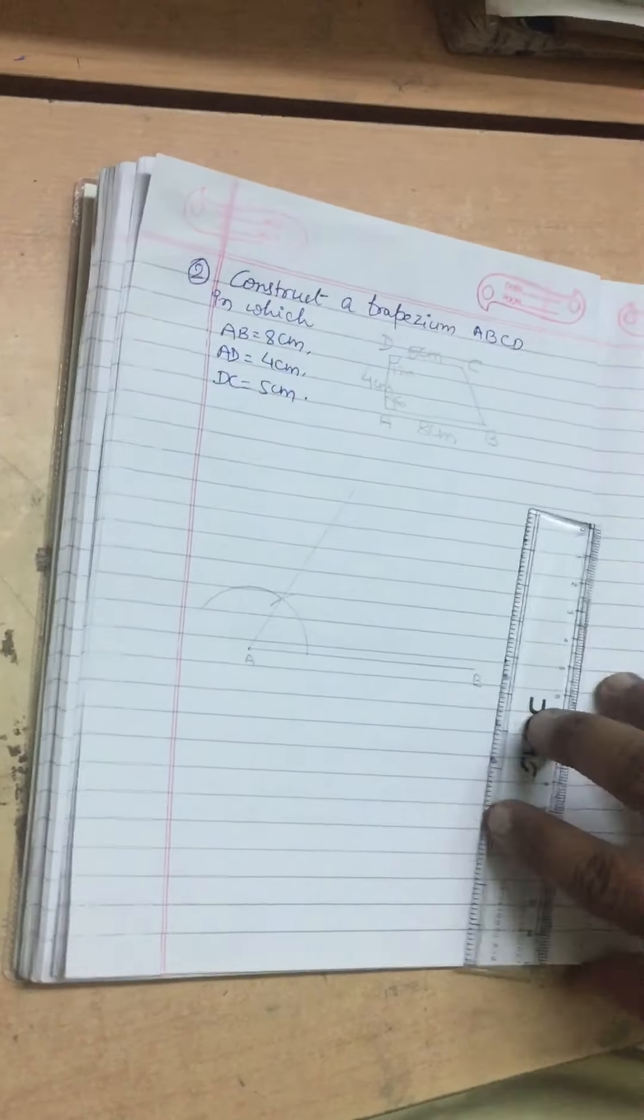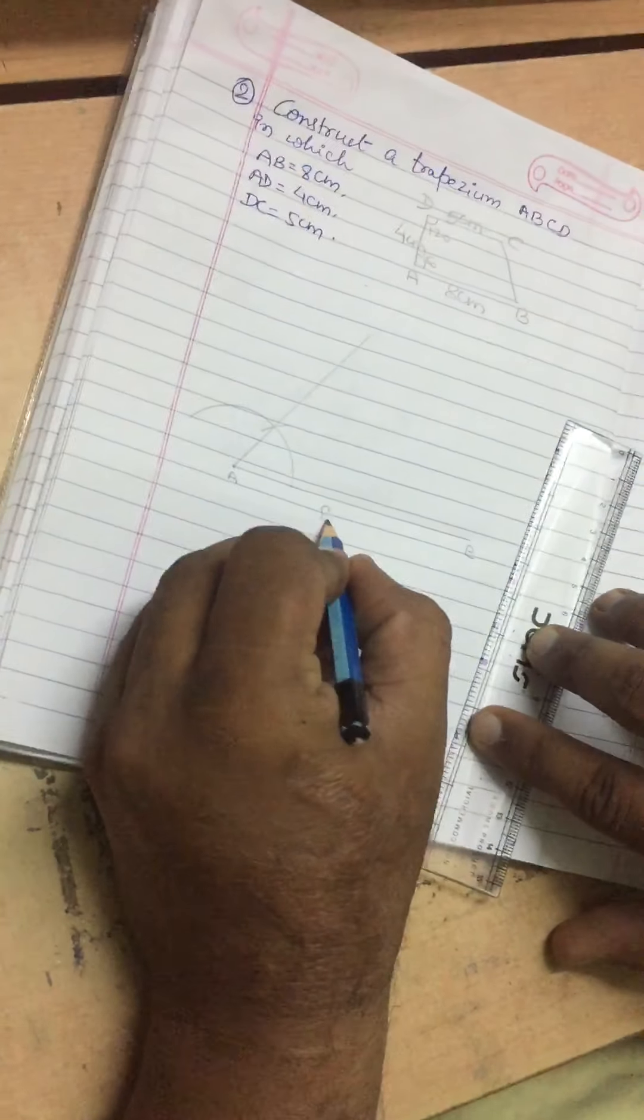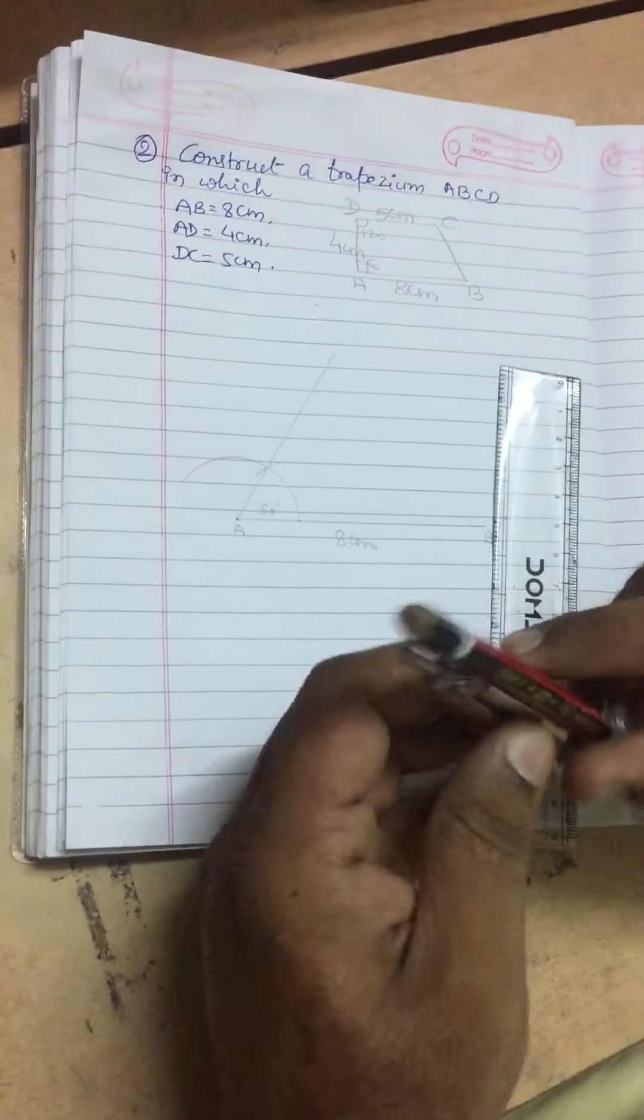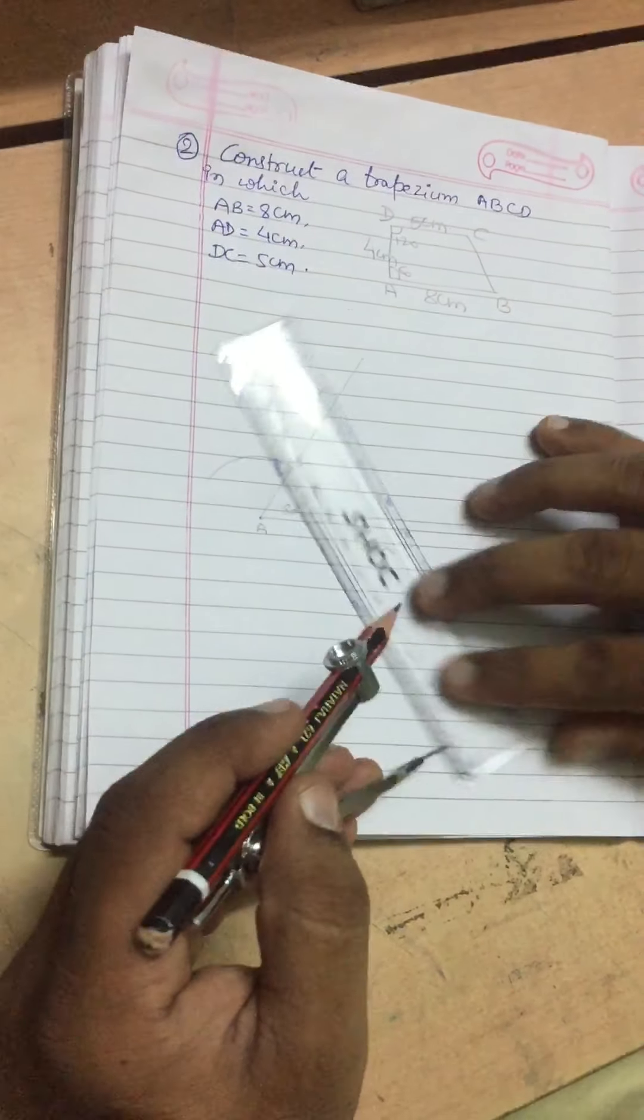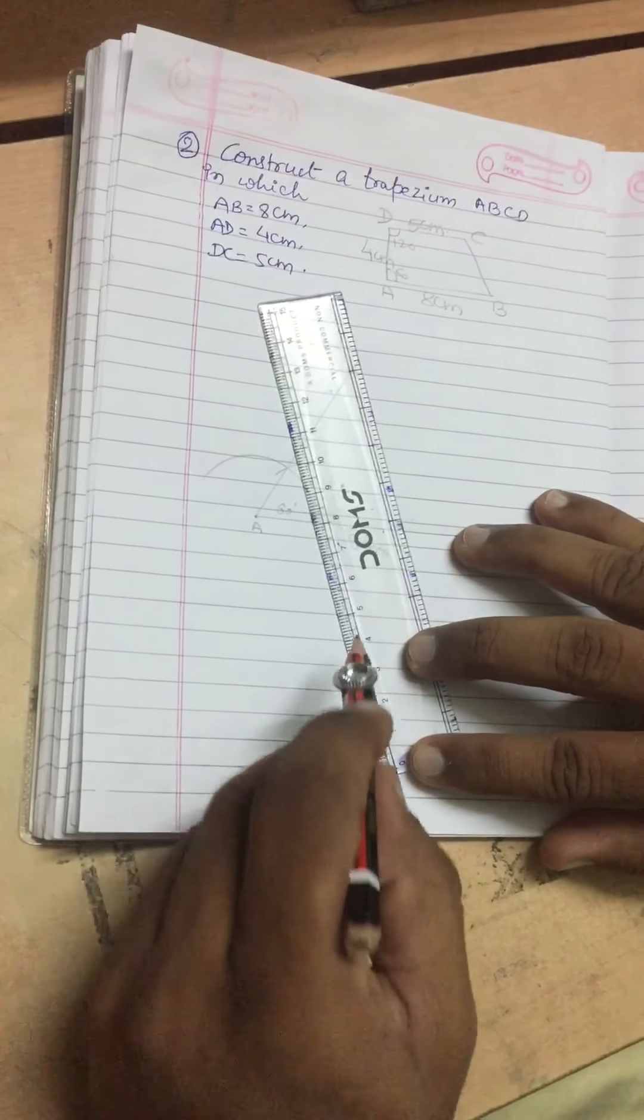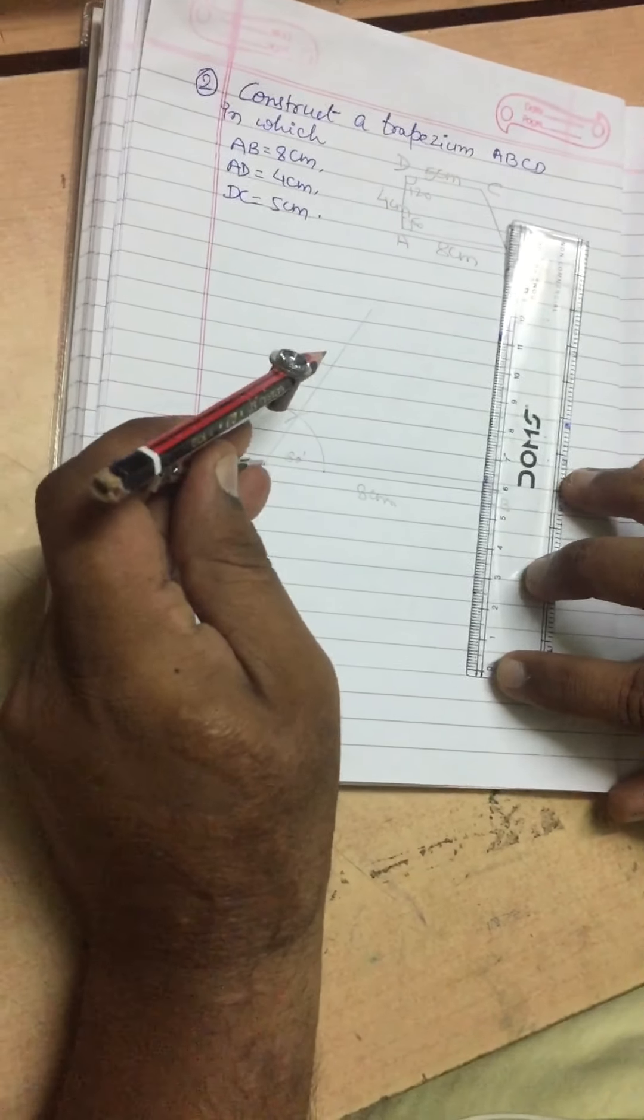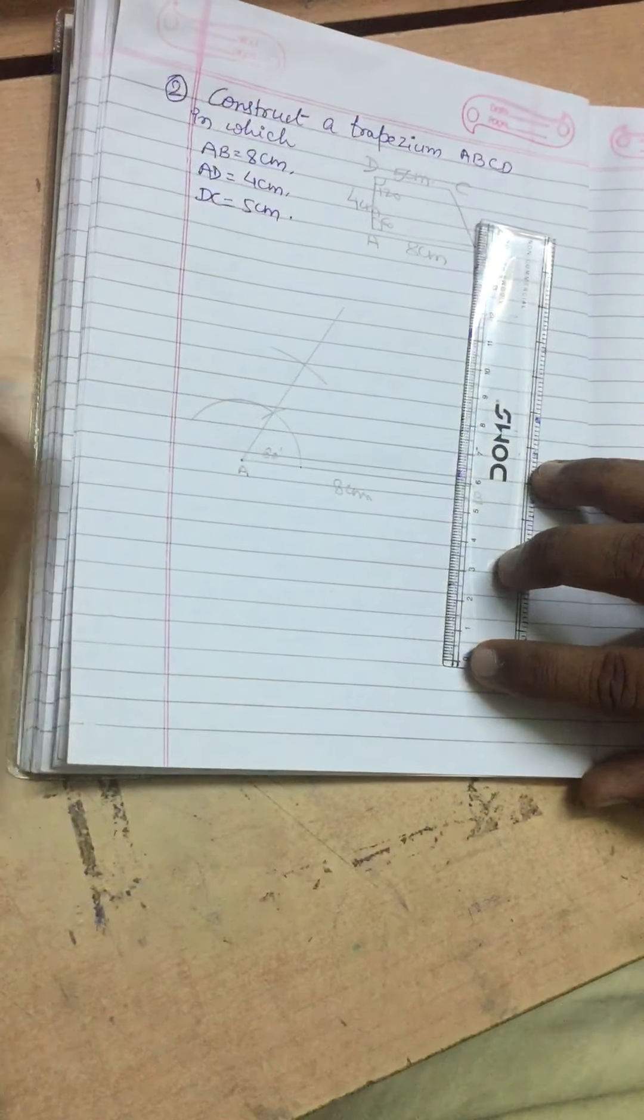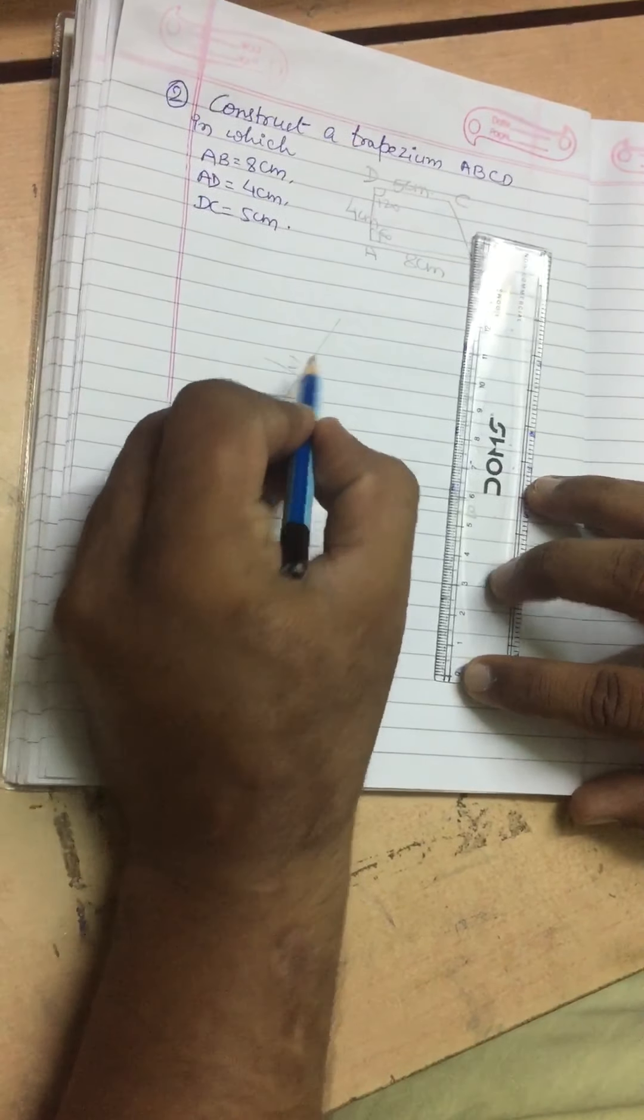Now we have been given AD as 4 centimeter. Let us label it 60 degrees. AD is 4 centimeter. I am opening the compass to 4 centimeter. We got AD, that is 4 centimeter. Let that point of intersection be D.